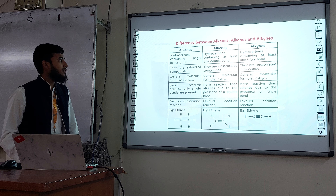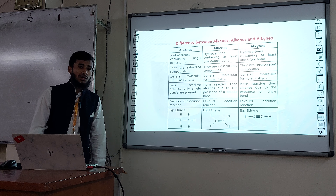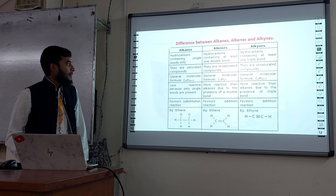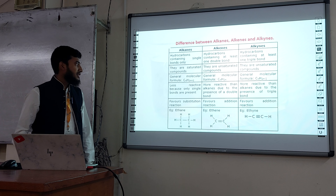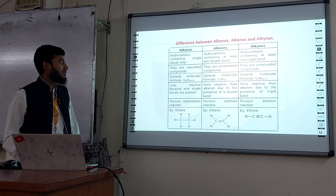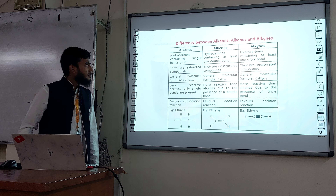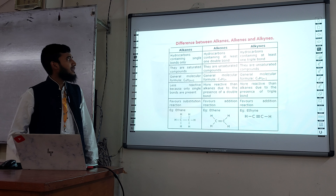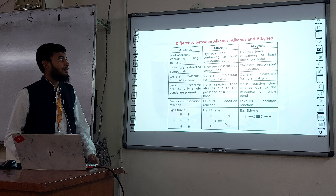Alkenes are hydrocarbons containing at least one double bond. They are unsaturated compounds. The general molecular formula is CnH2n. They are more reactive than alkanes due to the presence of the double bond. They favor addition reactions. Example: ethene.